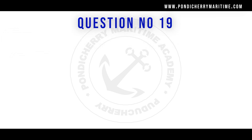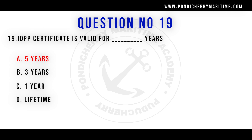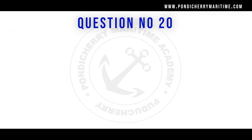Question nineteen: The IOPP certificate — International Oil Pollution Prevention certificate — is valid for how many years? Option A: 5 years. Option B: 3 years. Option C: 1 year. Option D: Lifetime. Correct answer is Option A, 5 years.